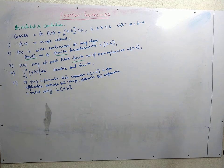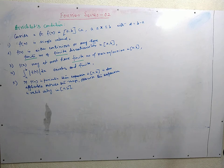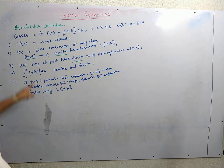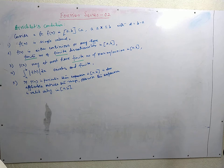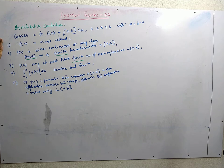Whenever we expand a function in Taylor series, the requisite condition was the analyticity of the function — the function must be finite and all of its derivatives must be finite in the range. In the Fourier expansion, the sufficient condition is Dirichlet's condition, which imposes a lot of relaxation. The function may have discontinuities, but in Taylor series it cannot be expanded at a point of discontinuity because the derivatives do not exist there. So Dirichlet's condition is a much more liberal condition than the analyticity condition in Taylor series.